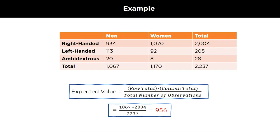The next step is to calculate the expected values. The expected value is calculated using the formula that is shown in the slide, which is row total into column total divided by the total number of observations.